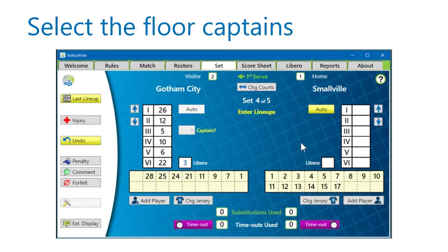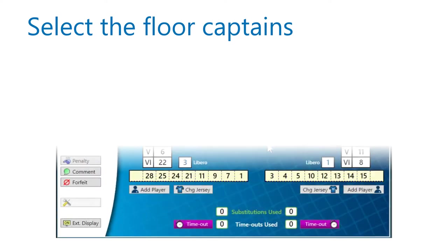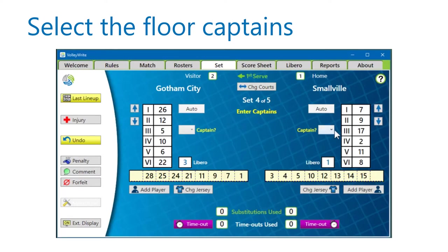Once a player is entered on a lineup diagram, when your rules include captain tracking, a captain box appears and you must select a captain for each team before you can accept the lineups. When a non-Libero player is the captain, you don't have to enter an alternate captain, so the alternate title is white and, by default, an X fills the box.